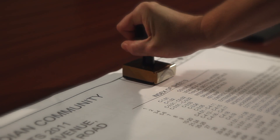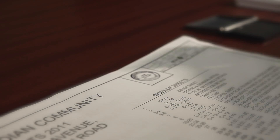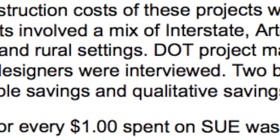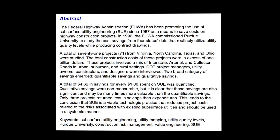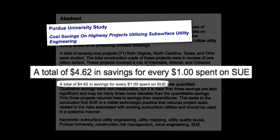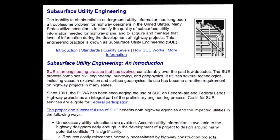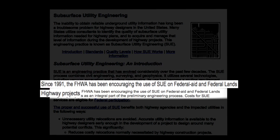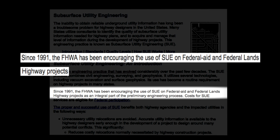Subsurface utility engineering is a proven process. Slight adjustments in design can produce significant cost savings by reducing or eliminating utility relocations. The FHWA has been encouraging the use of SUE on all federal aid and federal lands highway projects.